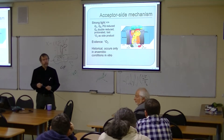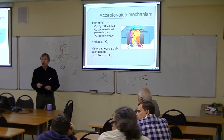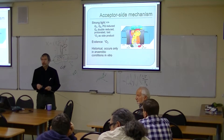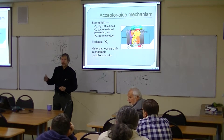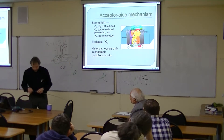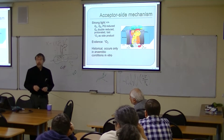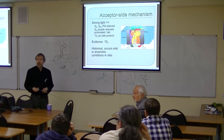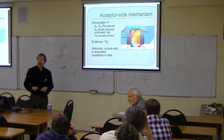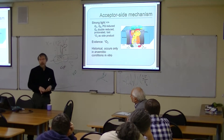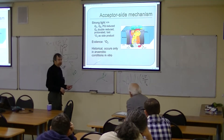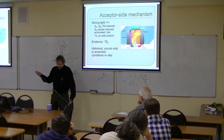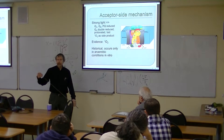After the double reduction, QA releases to solution. It becomes very hydrophobic and is released. The experimental conditions for this are also relatively harsh — you cannot achieve it with something like sunlight intensity; you have to go much higher light intensities as well. Therefore, this mechanism is considered historical — it is a possibility to damage photosystem 2, but not very likely to happen under milder conditions usually applied in experiments.